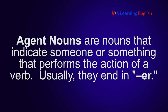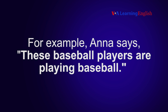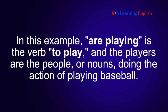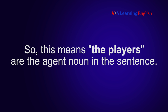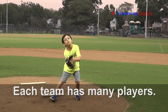Agent nouns are nouns that indicate someone or something that performs the action of a verb. Usually they end in ER. For example, Anna says: These baseball players are playing baseball. In this example, playing is the verb to play, and the players are the people, or nouns, doing the action of playing baseball. So this means the players are the agent noun in the sentence.